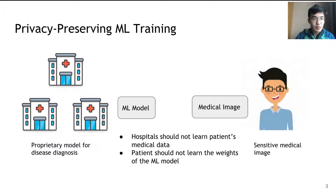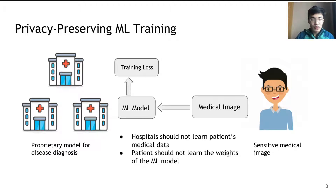Similarly, in the case of privacy-preserving machine learning training, multiple hospitals may want to train their proprietary model for disease diagnosis. The patient sends his medical image to the model, which outputs a training loss instead of a disease diagnosis. This training loss is then backpropagated through the model to update the model weights. Again, hospitals should not learn about the patient's medical data, and the patient should not learn about the weights of the machine learning model.